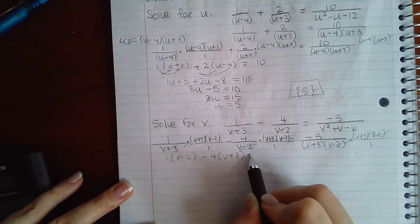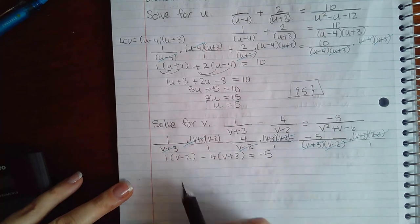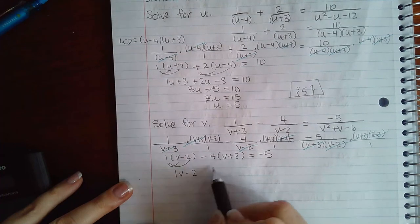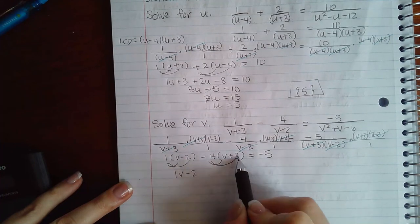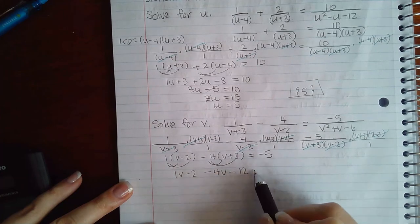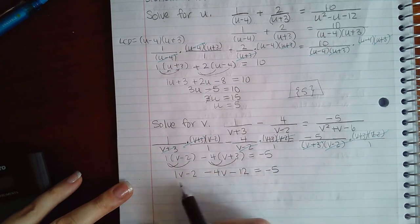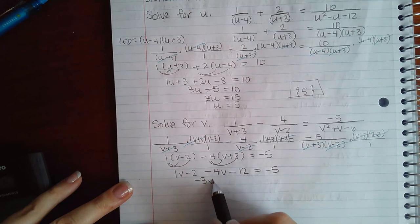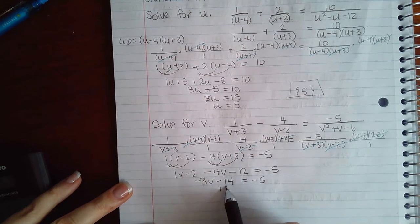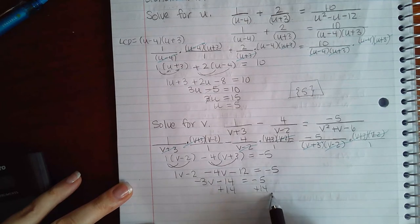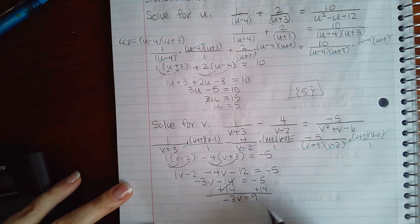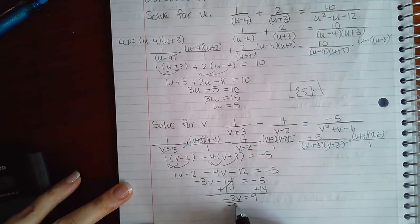If I distribute my 1, I get 1v minus 2. If I distribute this negative 4, I get negative 4v and minus 12. Combine my like terms, I get negative 3v minus 14. If I add 14 to both sides, I get 9. Then if I divide by negative 3 on both sides, I get v equals negative 3.